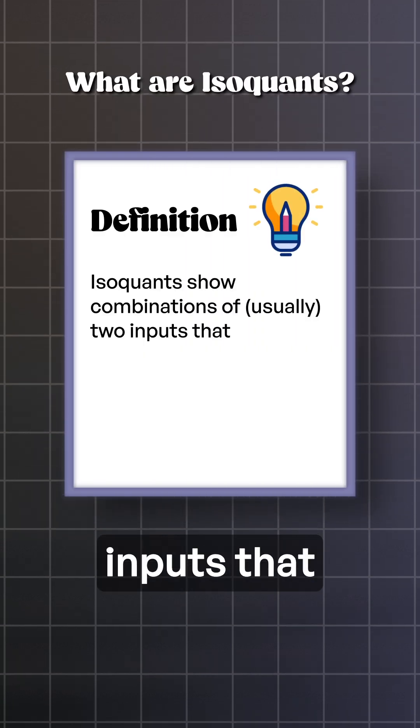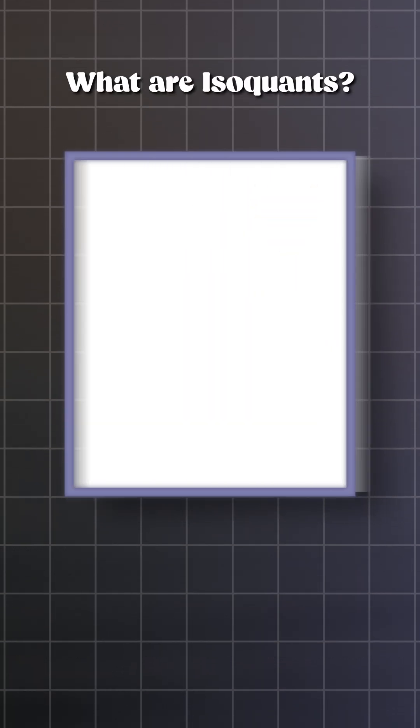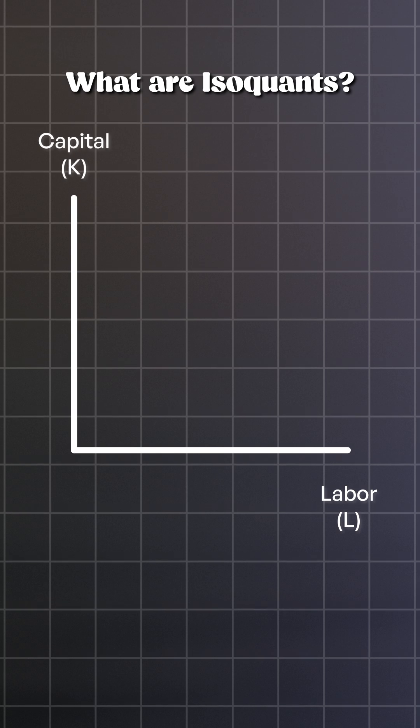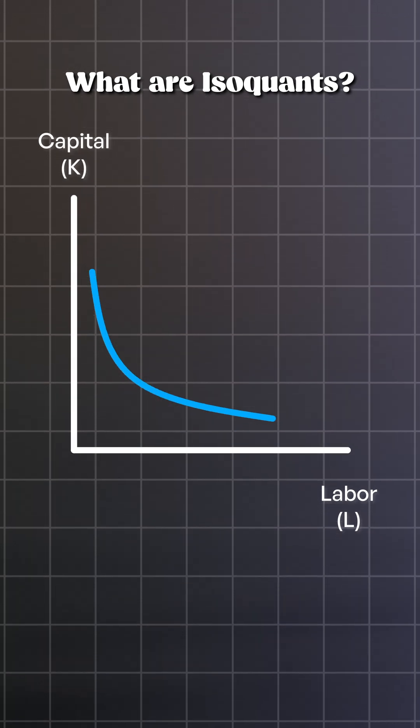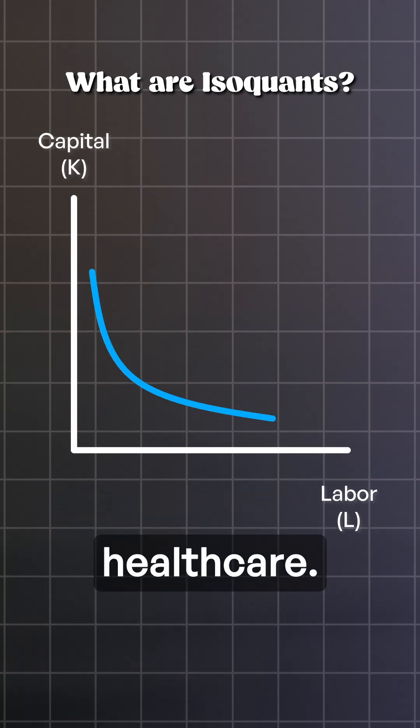Isoquants show combinations of two inputs that produce the same level of output. They're usually used to model production, like different mixes of labor and capital that yield the same number of goods. But let's apply this to healthcare.